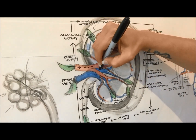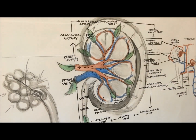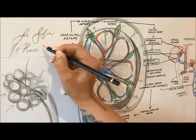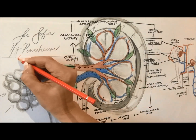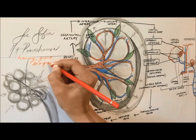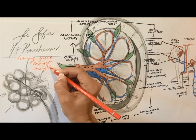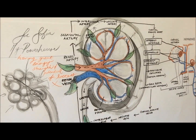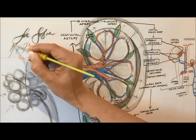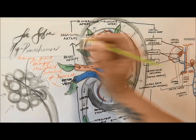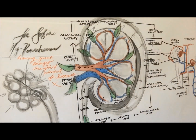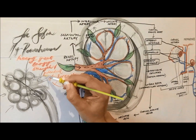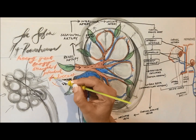Despite their relatively small size, the kidneys are multi-talented powerhouses of activity, not only receiving around 25% of all the blood in the body, but keeping the blood clean and chemically balanced. Thankfully, having two kidneys is not essential for life, and in fact half of one kidney is sufficient to keep an individual alive. This amazing organ controls the environment of all cells of the body, an activity that is essential to life.